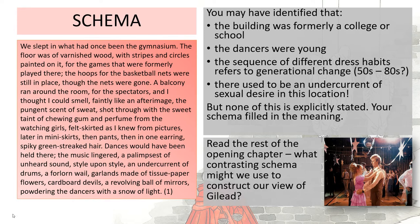Atwood as a writer doesn't provide you all of the information. Much of this information is implied, and schema allows writers to imply information for their readers. Read on the remainder of chapter one — which is of course just a short chapter — and ask yourself what contrasting schema then comes into play against this framework of teenage school years and dancing. Ask yourself how, as this chapter progresses, different schemata interplay together to give us an unsettling view of Gilead.